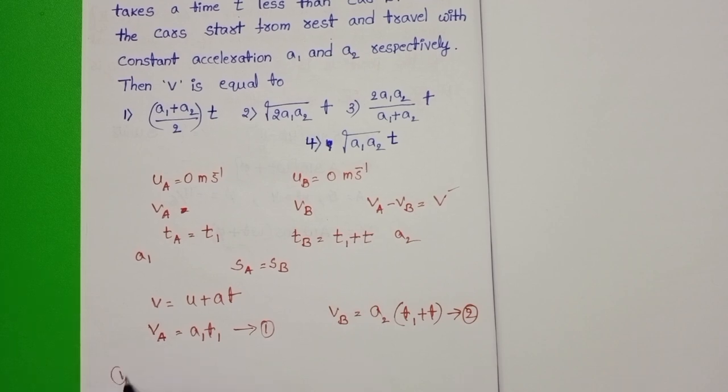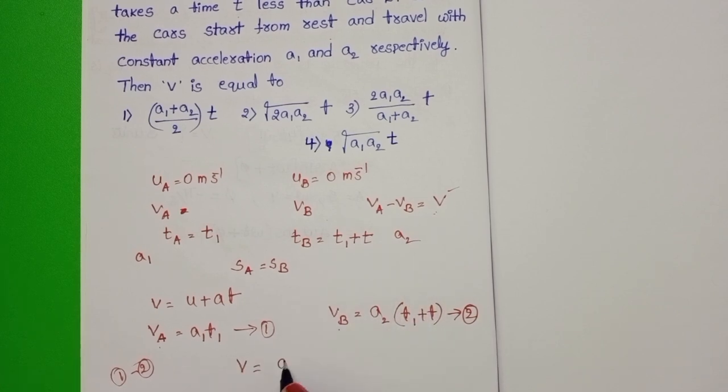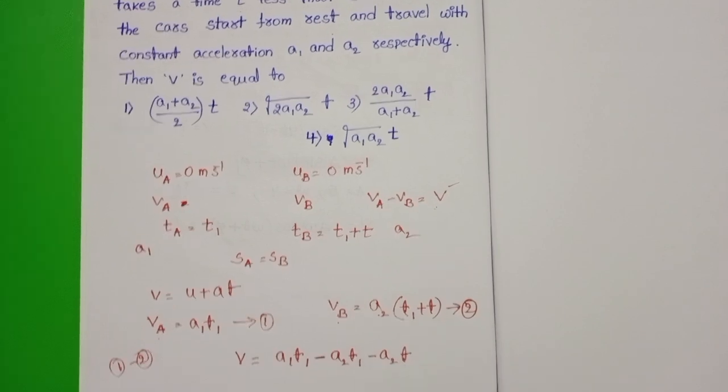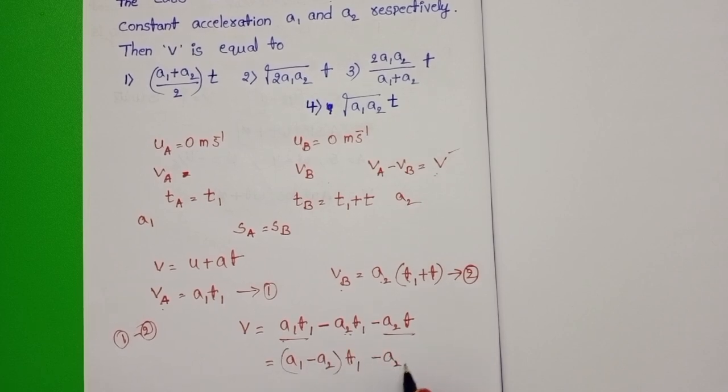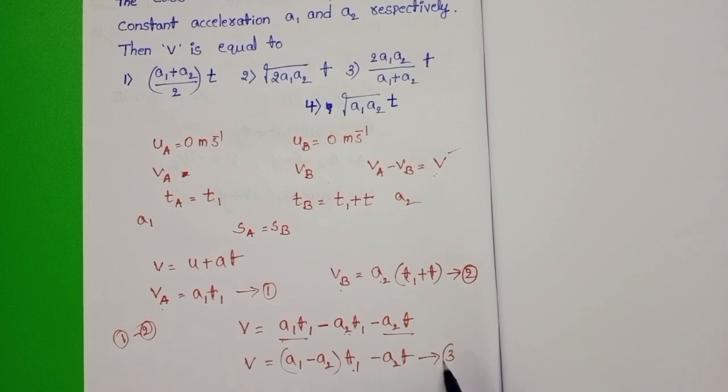From these two equations, take equation 1 minus equation 2. VA minus VB is equals to V. So V is equals to A1 T1 minus A2 T1 minus A2 T. From these two, take T1 common. A1 minus A2 into T1 minus A2 T. Take this equation 3.